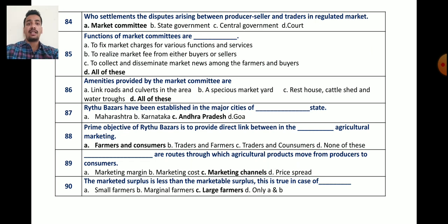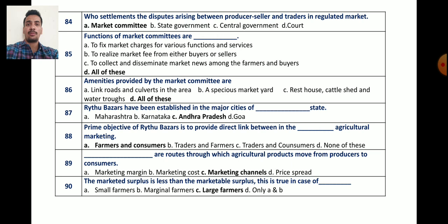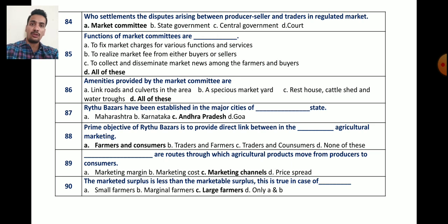Question number 84: who settles the disputes arising between the producer, seller, and trader in regulated market? Options are state government, central government, court, and market committee. The correct answer is market committee — it has the right to settle disputes arising between the producer, seller, and trader in a regulated market.